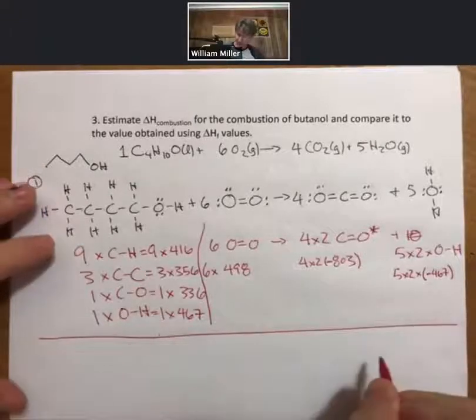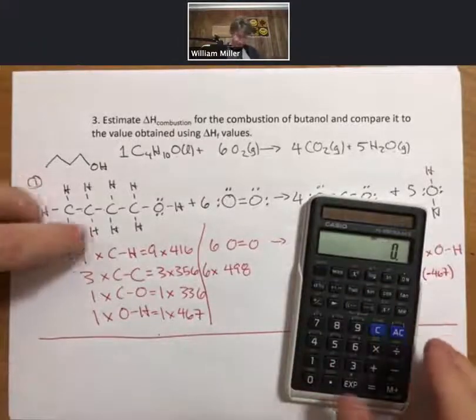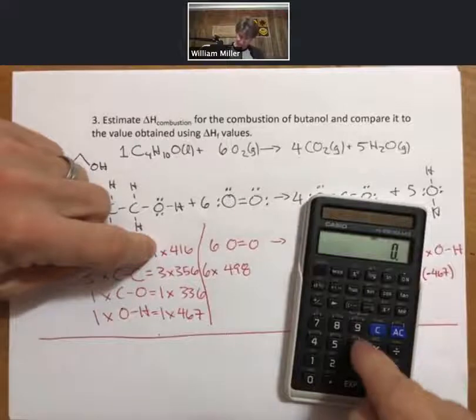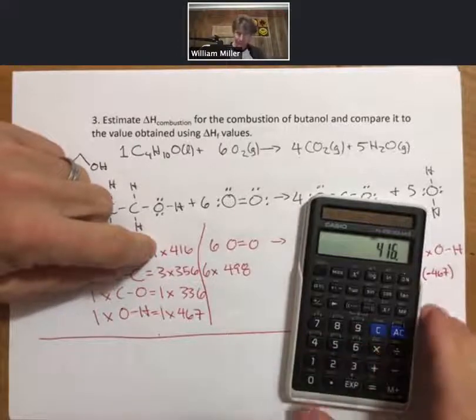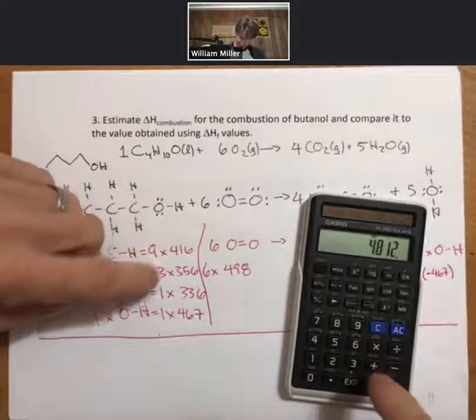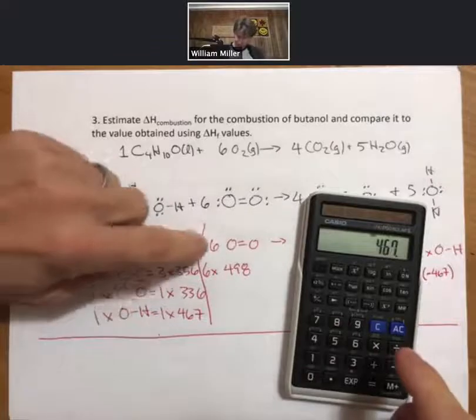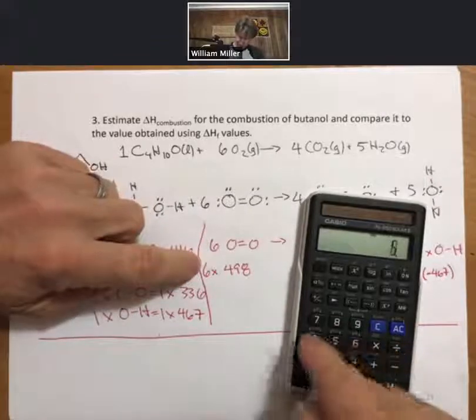So add everything up. Get some big numbers here. So 9 times 416 plus 3 times 356 plus 336 plus 467 plus 6 times 498.